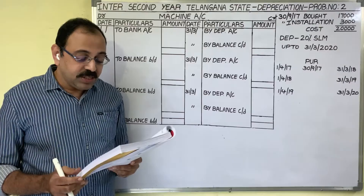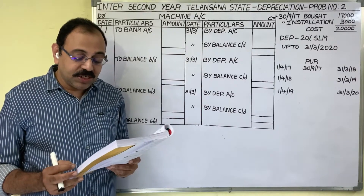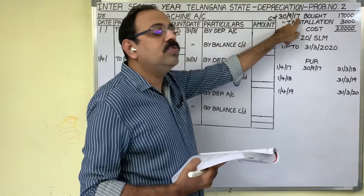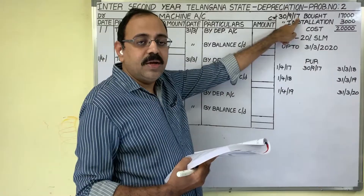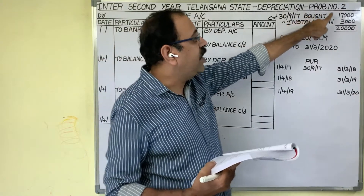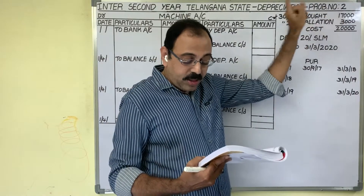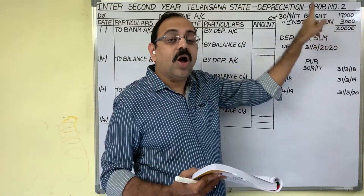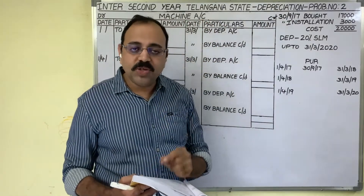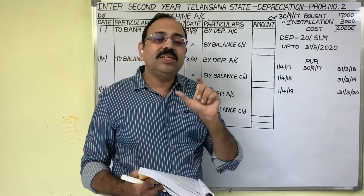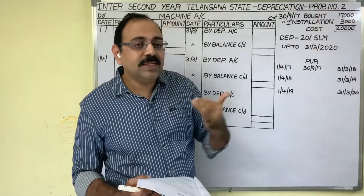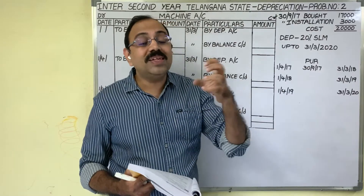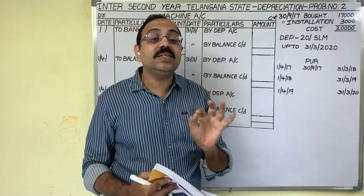On 30th September 2017, Ganesh, a trader, purchased a machine for 17,000 rupees and paid 3,000 for its installation on the same day. Installation charges are also known as erection charges — these are the expenditures incurred to bring the asset from the purchasing place to the factory, and to fix that asset in the factory.